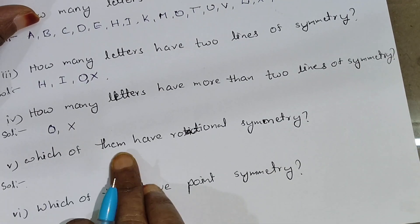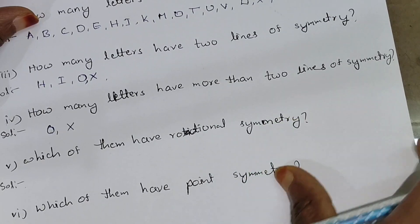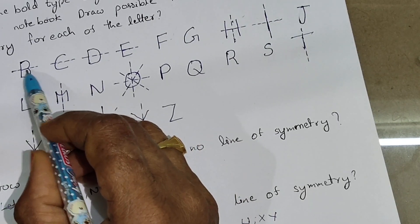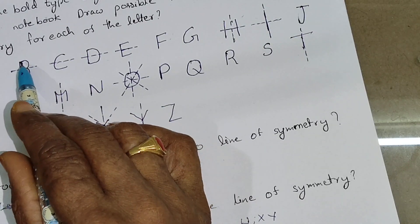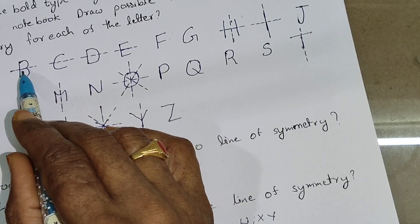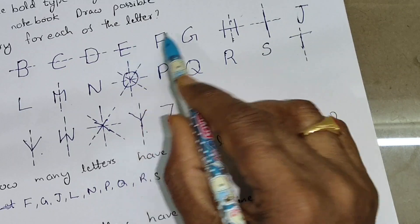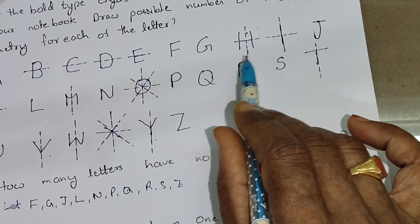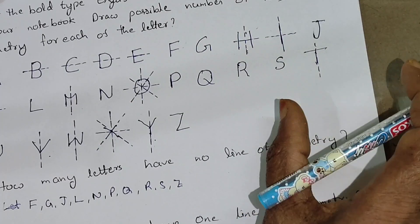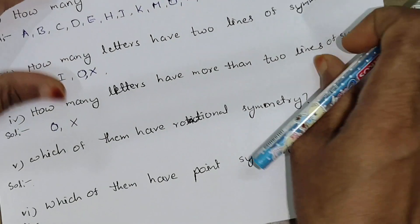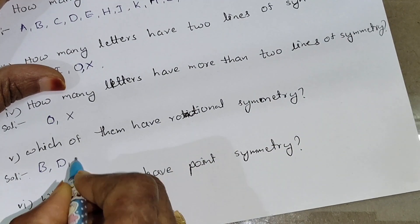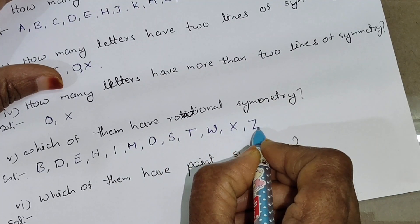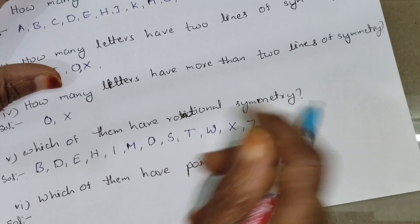Fifth question: which letters have rotational symmetry? B has rotational symmetry — when we rotate B 180 degrees it remains the same. D, E, H, I also have rotational symmetry. M, O, S, P, W, X, Z also have rotational symmetry. When we rotate the letter, the symmetry line divides the two parts — that is rotational symmetry.